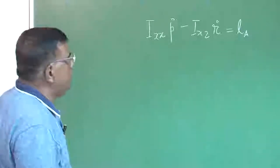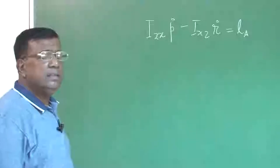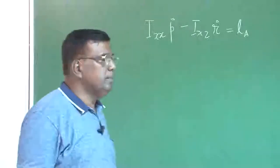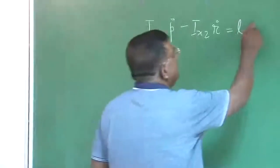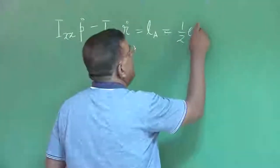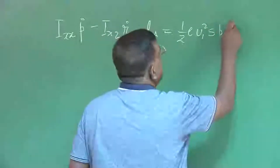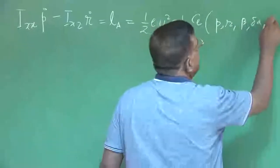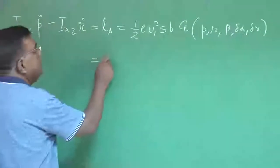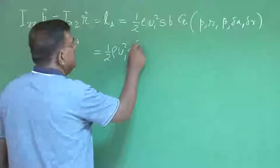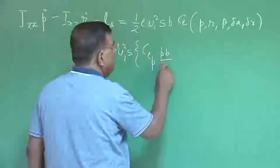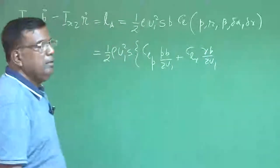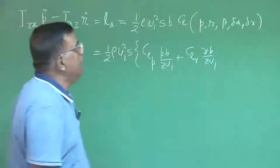Now, we are also clear that since we have written these equations in the stability axis system, we know how to give a correction for i_xx and i_xz, and we have appropriately taken the moment of inertia about the stability axis system. We know that L_a can be written as half rho u1 squared times S times b, into C_l, where C_l is a function of p, r, beta, delta_a, and delta_r. Then we wrote it as half rho u1 squared times S into C_lp times p*b/(2u1) plus C_lr times r*b/(2u1), multiplying by b/(2u1) to non-dimensionalize p and r, which are the rates.